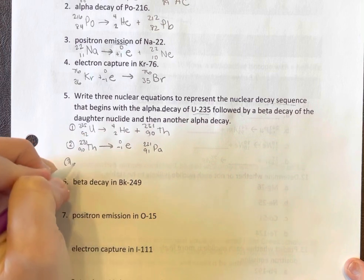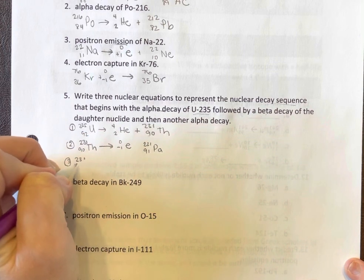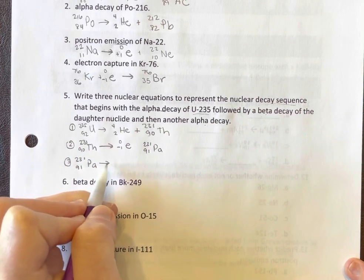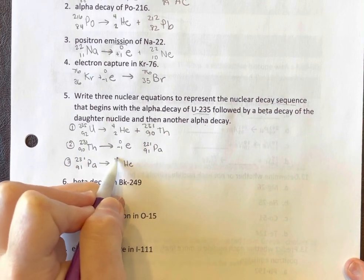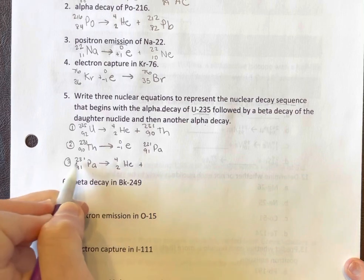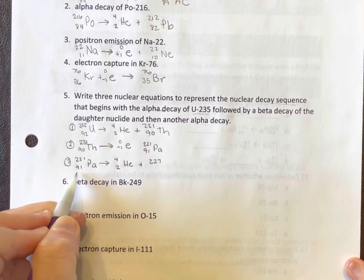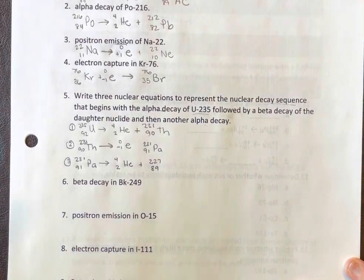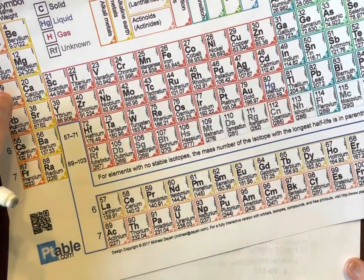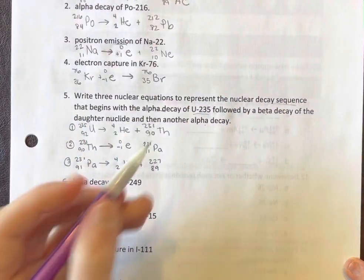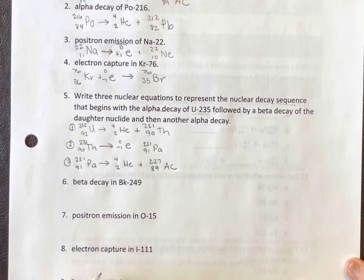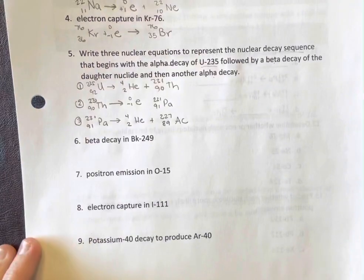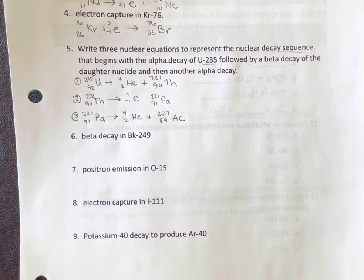And finally, that daughter nuclide then becomes our starting substance, which is going to then undergo alpha decay. So 231, that's 227. 91 minus 2 is 89. And 89 goes to actinium. So it's three equations there. All right. Now, after that, these should be pretty easy.